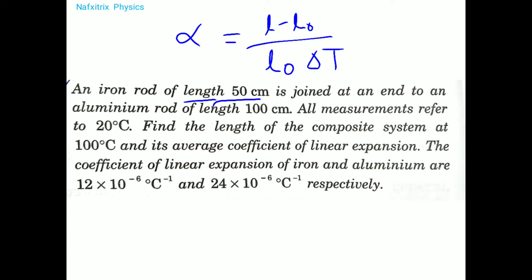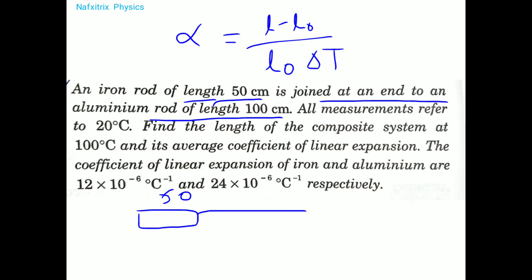The problem: an iron rod of length 50 centimeters is joined at its end to an aluminium rod of length 100 centimeters. This forms a composite rod — iron (50 cm) joined to aluminium (100 cm). All measurements refer to 20 degrees centigrade as the initial temperature.